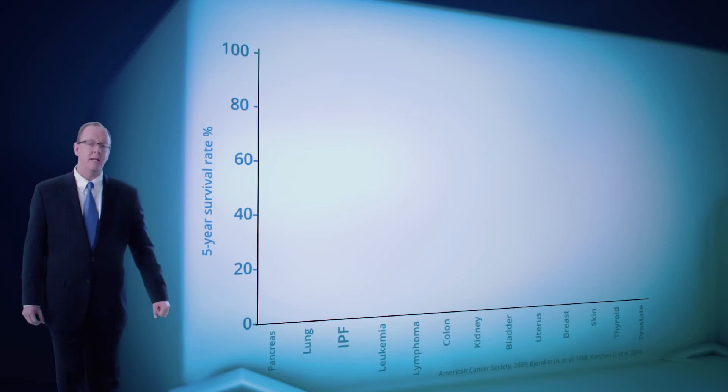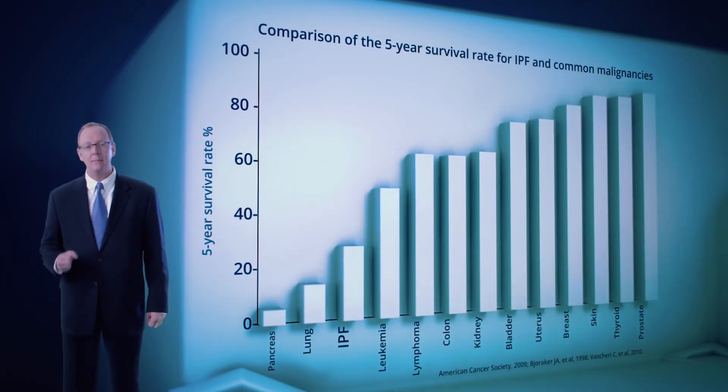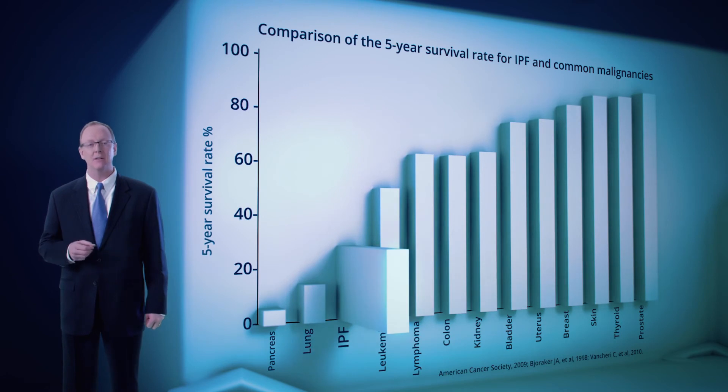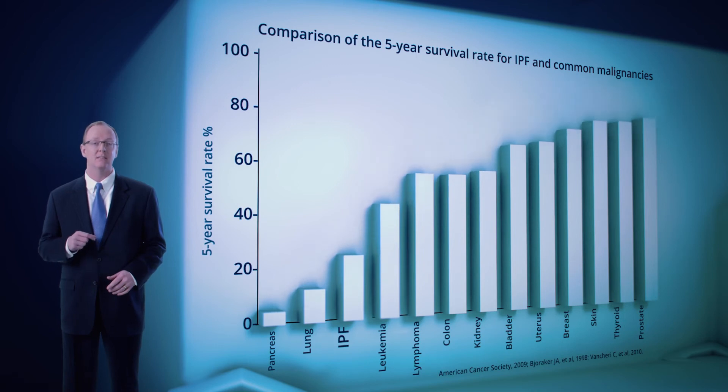It's important to note that IPF carries a poor prognosis. In fact, IPF's mortality rate is higher than many cancers and all other idiopathic interstitial pneumonias. For most patients with IPF, the median survival rate is 2 to 5 years after diagnosis, with 20 to 40% of patients living to 5 years and some living considerably longer.